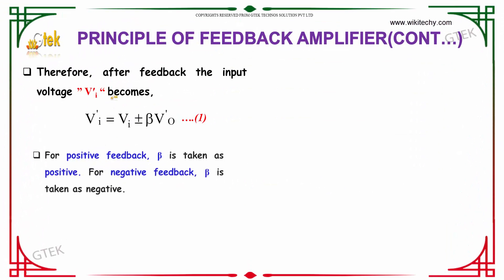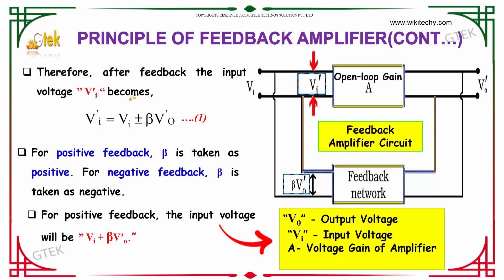After feedback, the input voltage Vi becomes Vi'. The output V0 goes through the feedback network and becomes βV0'. Here Vi is present, so the new input becomes Vi plus or minus βV0', which equals Vi'. This establishes the relationship: Vi' = Vi ± βV0'.